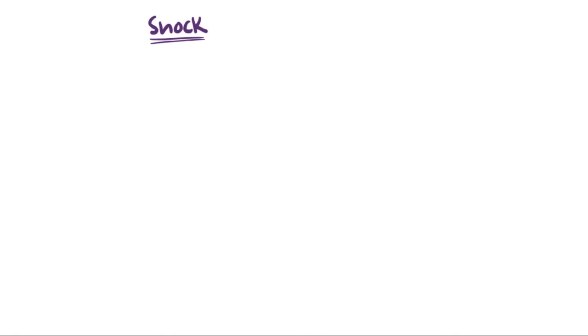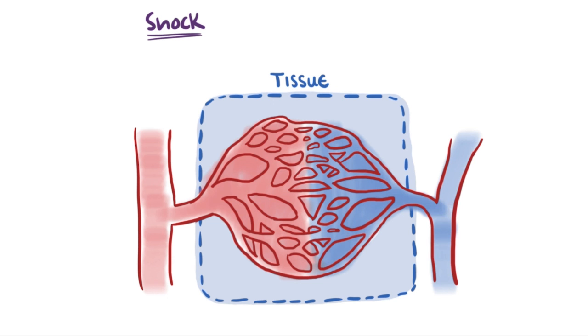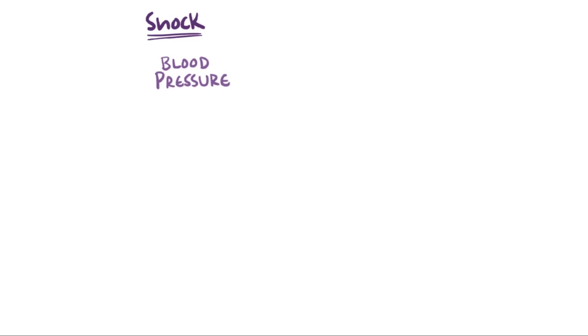With shock, the body's tissues aren't getting enough oxygen via the blood. Normally, blood perfuses through tissue and delivers oxygen because there's enough pressure in the circulatory system to push it through. So blood pressure is a major determinant for the amount of blood perfusing through tissues.